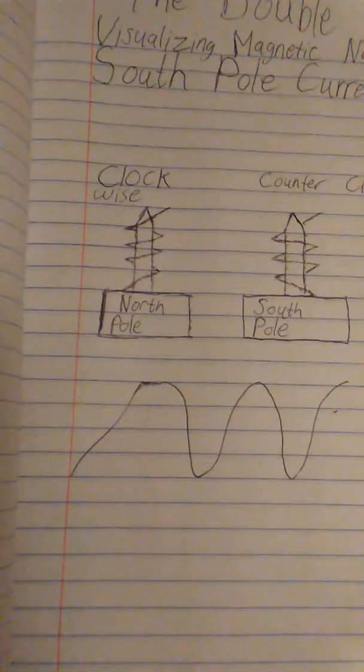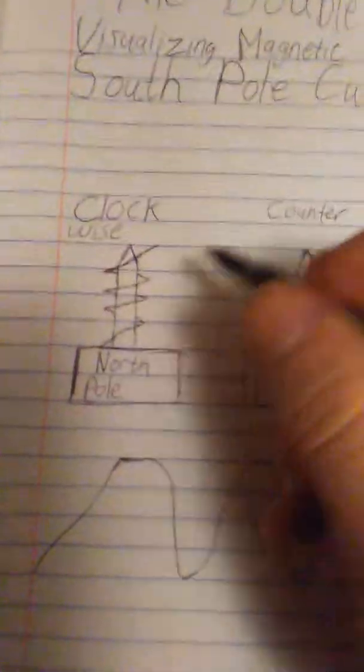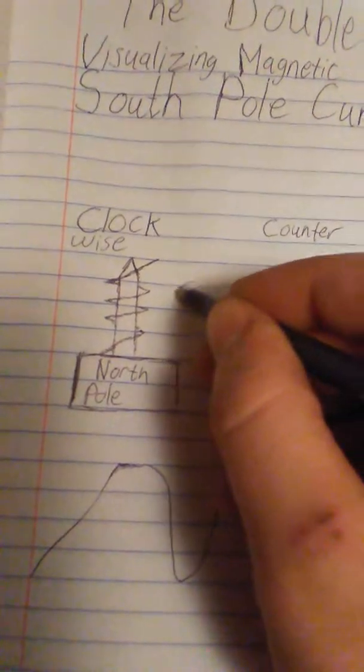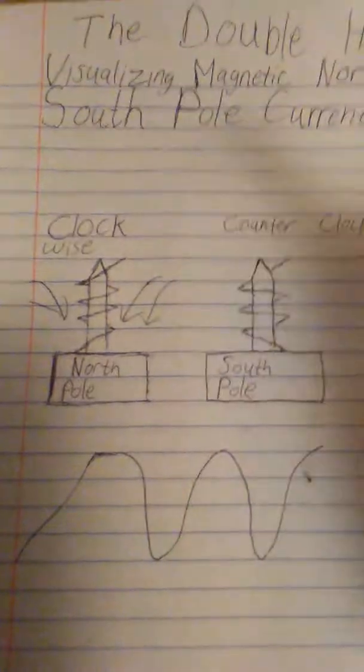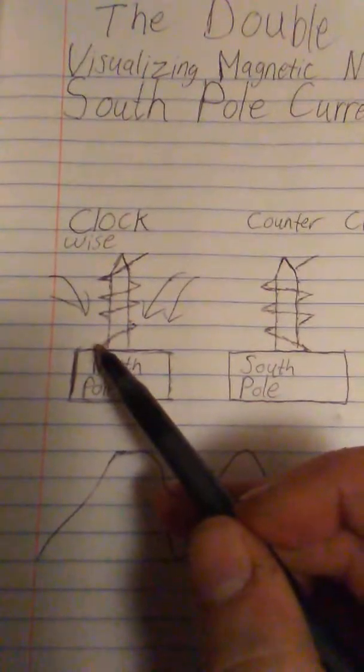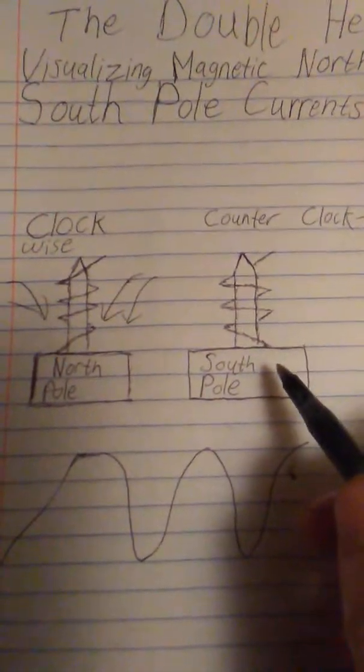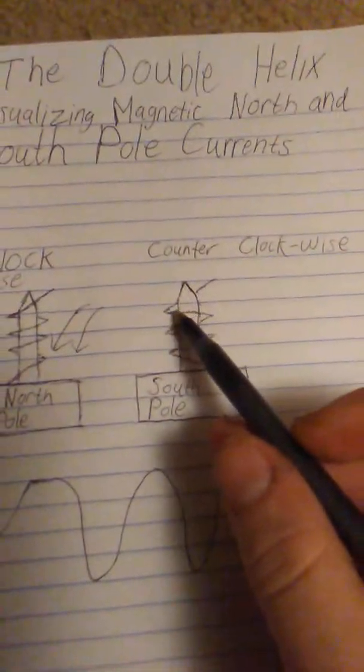And the only way to visualize this is by testing out magnets and seeing how magnetic current actually works. So magnets naturally pull in energy from the outside in, but they also emit a polarity from the dead center. So the polarity of, say, a north pole magnet would be a clockwise rotation of energy. The polarity of a south pole magnet would be a counterclockwise polarity.